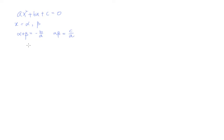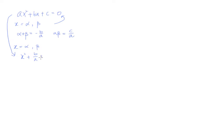Now what we want to talk about is: what if I know the roots of the quadratic equation, and how am I going to come back to the equation itself? Meaning, we have the roots and we want to find out what the equation is. If we were to divide throughout by A, we will have X² + (B/A)X + C/A = 0.